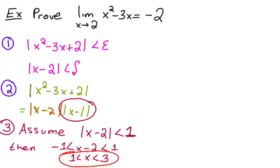So now if x is going to be between 1 and 3, then what that means is that absolute value of x minus 1 is going to have to be less than 3 minus 1, which is 2.